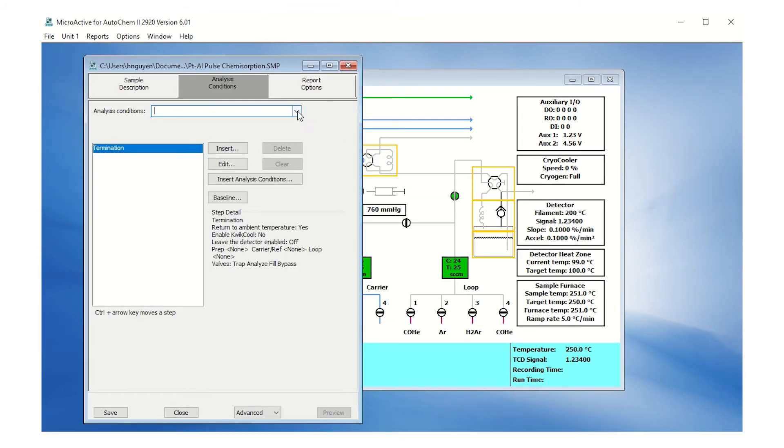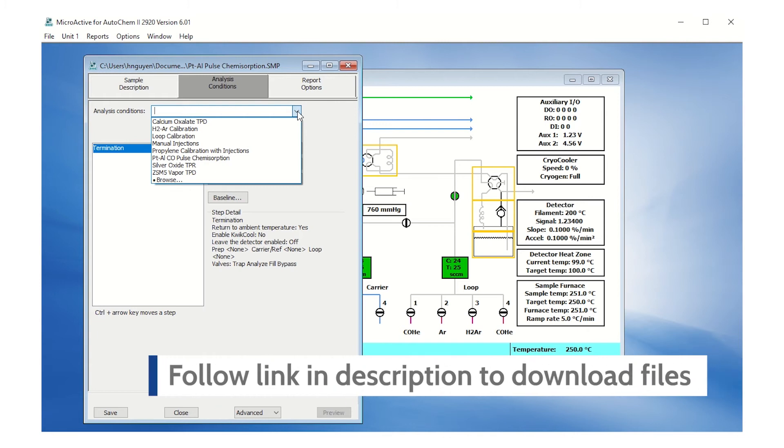Under the Analysis Conditions tab, select the drop-down box to access preset analysis conditions. An updated analysis condition for CO pulse chemisorption on platinum alumina is in the link provided on the video description below.